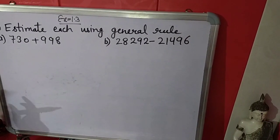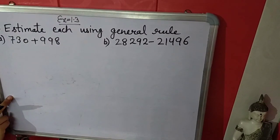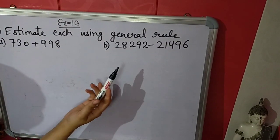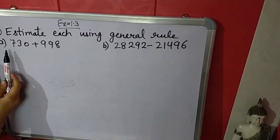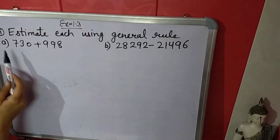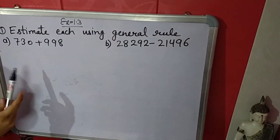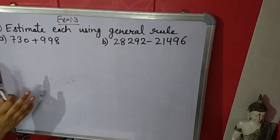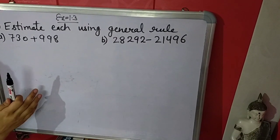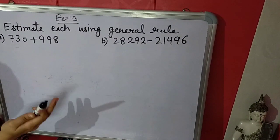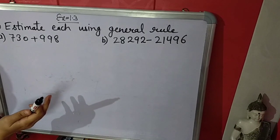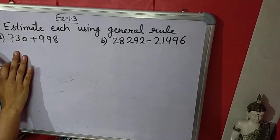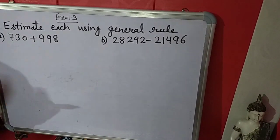Now we will do exercise 1.3. The first question says: estimate each using the general rule. We have to estimate a sum, but it is not given which place we have to estimate nearest to. So we will use nearest to 10, 100, or 1000 according to the question.